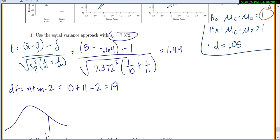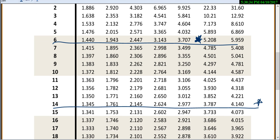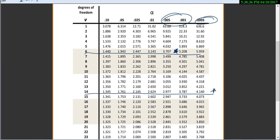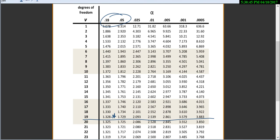Here's my 1.44. Look at your alternative. That's a greater than sign, so we want the area to the right with 19 degrees of freedom. You're looking for 1.44, which puts us about here. So my p-value is between 0.05 and 0.1.